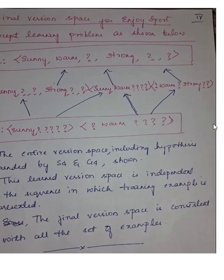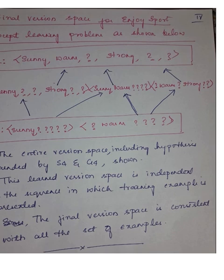This is our entire version space, including the hypothesis bounded by S4 and G4. One important thing to note is that this learned version space is independent of the sequence in which the training examples are presented. Even if you change the ordering of example 1, 2, 3, and 4, you should finally get this same hypothesis. This is our final version space, consistent with the set of examples given in the table.